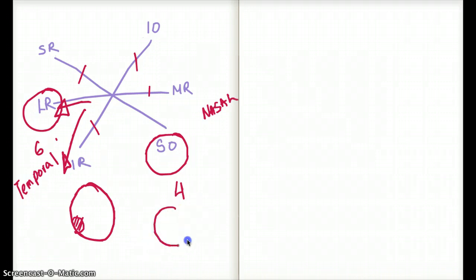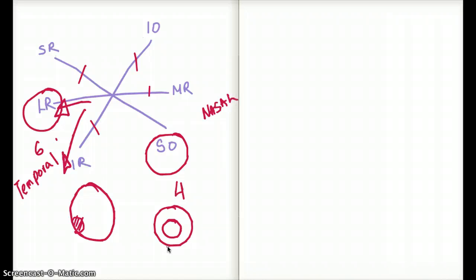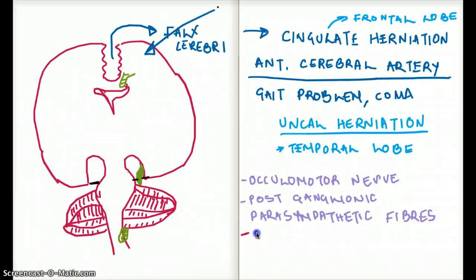The other thing affected is that the pupil is going to be dilated, because the post-ganglionic parasympathetic fibers are affected and you will not be able to constrict the pupil. Those are the effects of uncal herniation onto the midbrain. There are also other effects — for example, Duret hemorrhages, which are hemorrhages onto the midbrain and pons area due to uncal herniation.